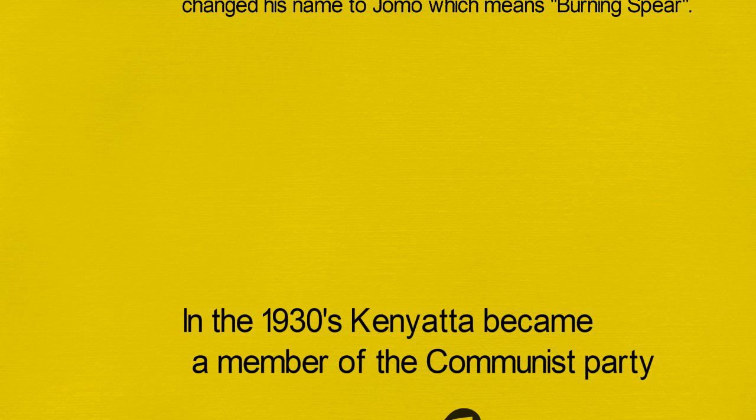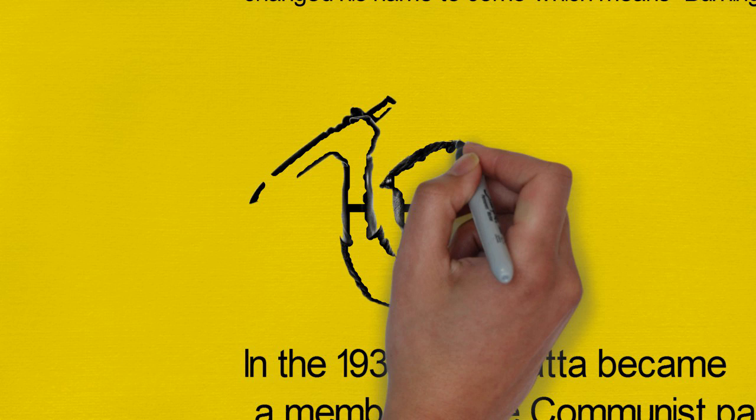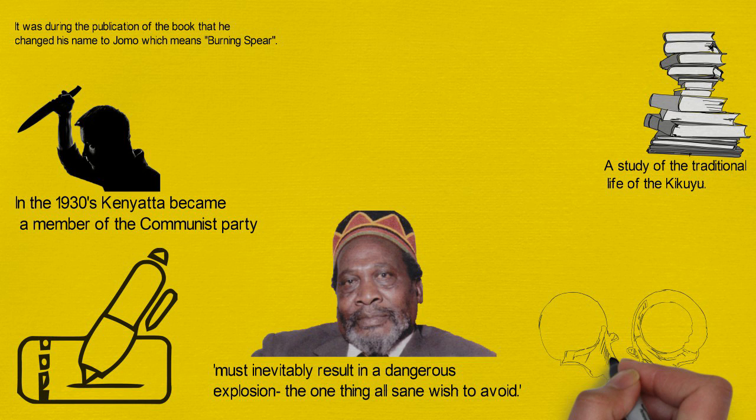Jomo returned to Kenya in 1946 and took over the leadership of the Kenyan African Union, KAU. He became its president in June the following year. In 1952, the Mau Mau Rebellion — an attack on the Europeans in Kenya — took place, and Kenyatta was arrested on October 21, 1952, for leading the movement, and was given a seven-year sentence in April 1953.